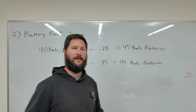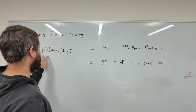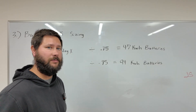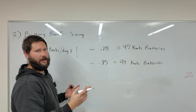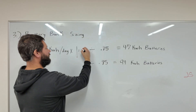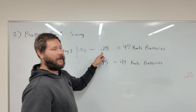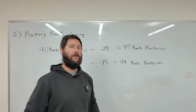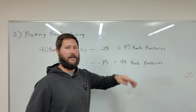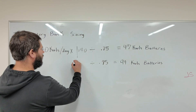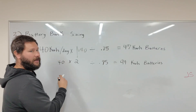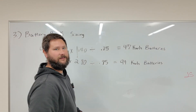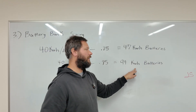Now let's size our battery bank. How many days of autonomy do you want? You take your total kilowatt hours of usage per day and multiply it by the number of days you want to be autonomous. For one day: 40 times 1 equals 40, then divide by 0.85, which gives us 47 kilowatt hours of batteries. For two days: 40 times 2 equals 80, divide by 0.85, giving us a total battery bank of 94 kilowatt hours.